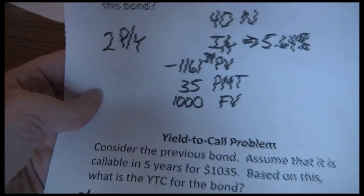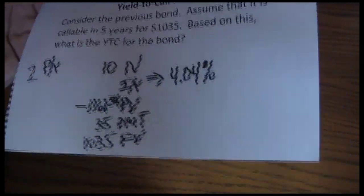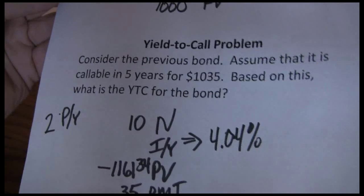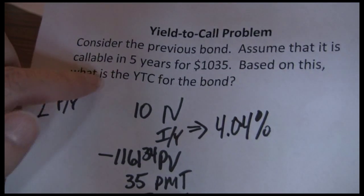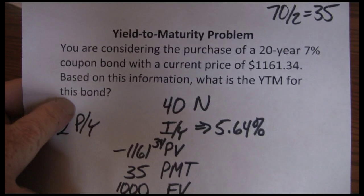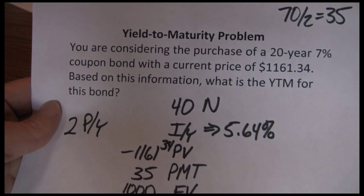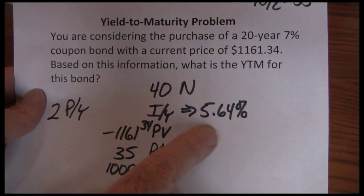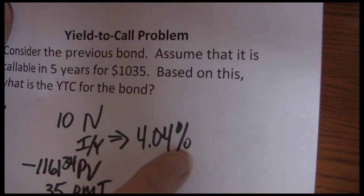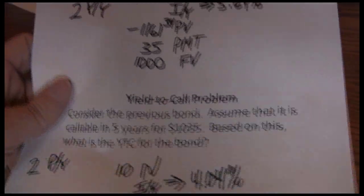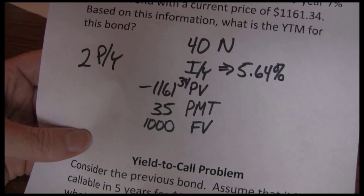Now let's look at this callable bond. If we buy this bond today, two things might happen. One, the company might call it in five years for $1,035. Or two, the company might choose not to call it and we get to hold it for the full 20 years until maturity. We know that if we hold it for the full 20 years, we'll earn 5.64%. If the company calls it, we're only going to earn 4.04%. Which is our most likely rate of return if we buy this bond today?